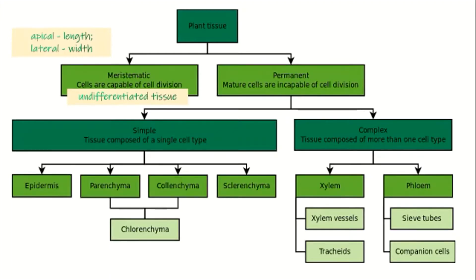The apical meristematic tissues are responsible for the length or height of your plants — they make the plant longer. The lateral meristematic tissues are responsible for growth in width, making the plant thicker. The lateral meristematic tissues can be seen as the rings of your tree when you cut the trunk.